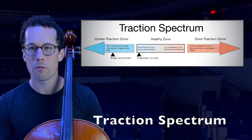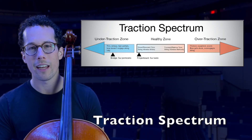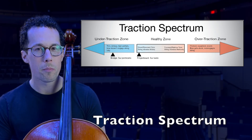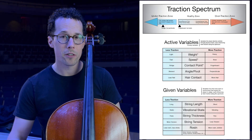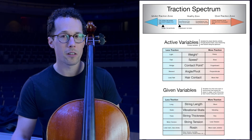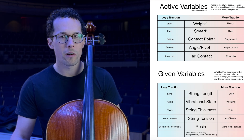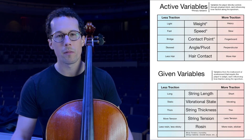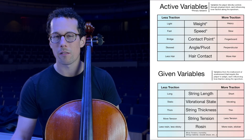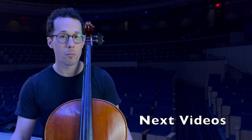Let's take a look at the traction spectrum, which represents traction between the bow and the string from low to high. It's divided into three main zones: under traction, healthy, and over traction. Through the series, warm colors indicate higher traction and cool colors indicate lower traction. You can download a PDF using the link in the comments. Below the spectrum, you'll see a list of variables that influence traction and adjustments that increase or decrease it. In this video, we're introducing the traction spectrum and defining the two categories of variables: active variables and given variables. Active variables are the ones you can intentionally adjust while playing. Given variables come from the instrument or the environment — things like string tension, humidity, or the amount of rosin on the bow. These still affect traction, but you respond to them rather than control them directly. In the next two videos, we'll cover each variable, how to adjust it, and its effect on traction.